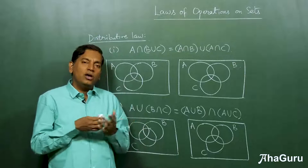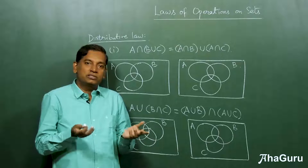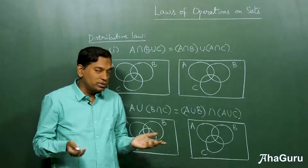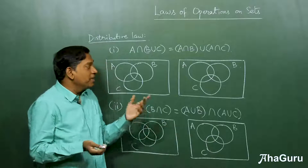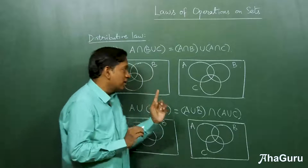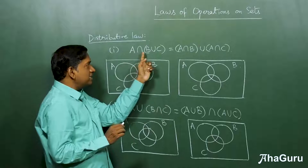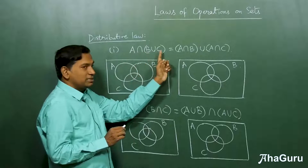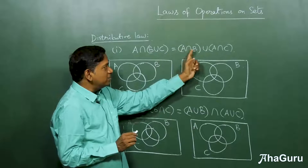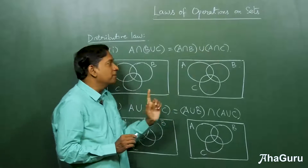This is true for all kinds of numbers — positive, negative, rational, irrational — everything it holds. Here, we have something similar. A intersection B union C is A intersection B union A intersection C.